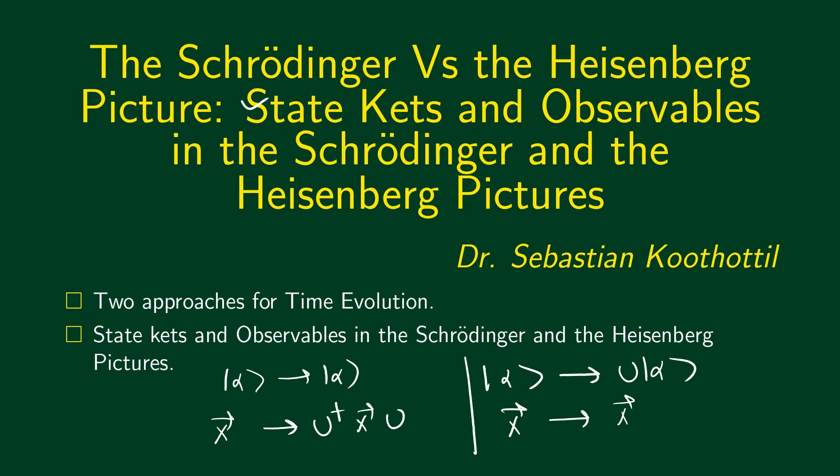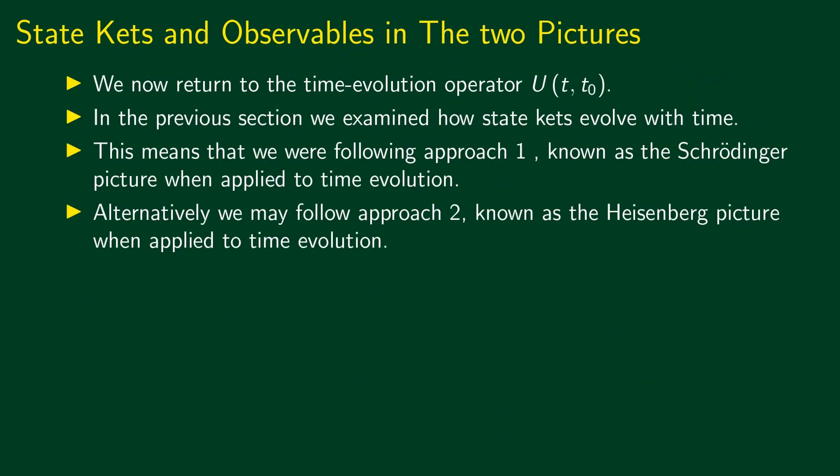We saw that in both cases, the expectation values change the same way. Whether you use approach 1 or approach 2, the expectation values change in the same way. In this session, we shall focus on the two different approaches for time evolution. These two approaches are called the Schrödinger picture and the Heisenberg picture.